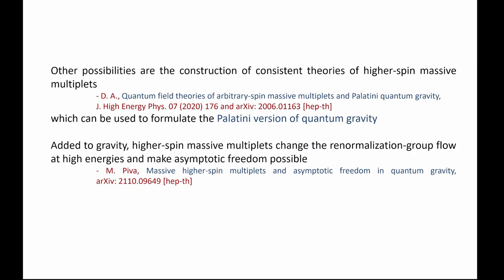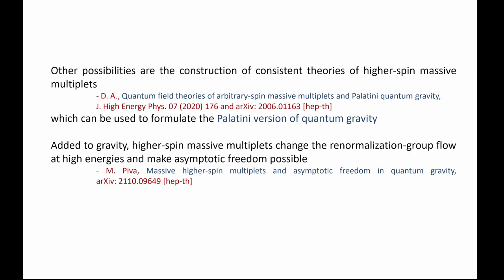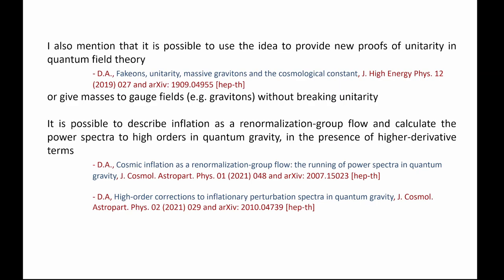The focus of this talk is the construction of consistent theories of higher spin massive multiplets. You cannot make a single higher spin massive field renormalizable and unitary by itself — like a spin 2, you need something else: a spin 0 and a spin 1. Some of those extra fields belonging to the multiplet will be fake, quantized in this new way. If you add these fields to gravity, you can change the behavior of the renormalization group flow of gravity at high energies, making it asymptotically free, as shown recently by Marco Piva.